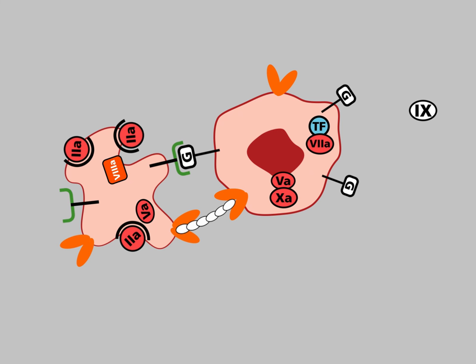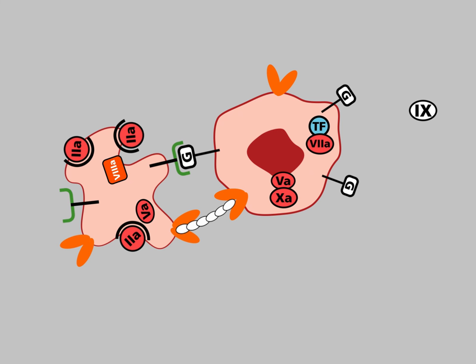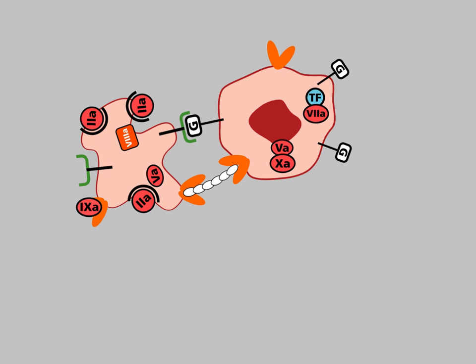The activated platelet associates with the tumor cell via binding of P-selectin to sialyl Lewis X glycans and via binding of the fibrinogen receptors to fibrinogen. The complex of tissue factor and activated factor VII on the surface of tumor cells also activates factor IX, which interacts with factor VIIIa and phospholipids associated with the activated platelets.